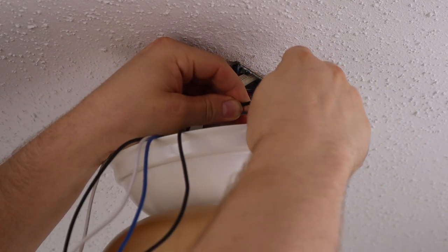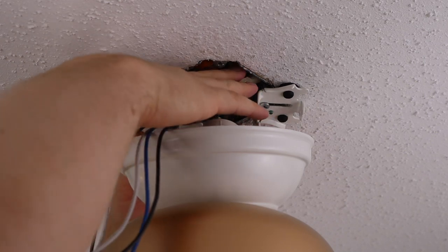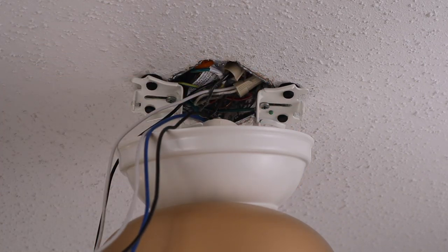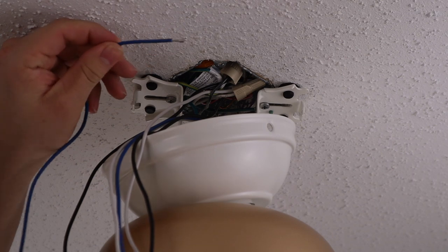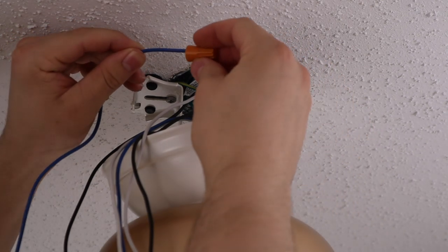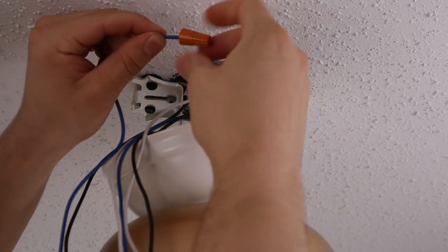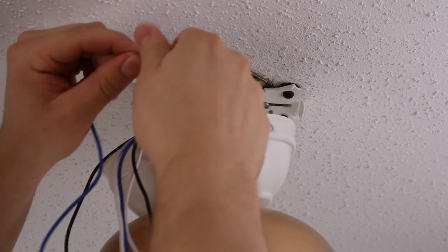Ensure all wiring connections are tucked into the electrical box. If the blue wire from the fan is not utilized for separate light control as mentioned earlier, cap it with a spare wire nut. Gather and tuck all excess wiring into the mounting bracket space.